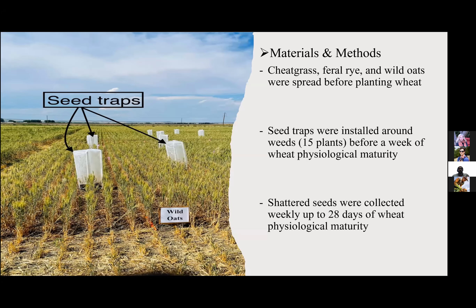Last summer, they worked with three species — cheatgrass, feral rye, and wild oat — spread before planting wheat. After the plants matured and started producing seeds, 15 plants were randomly selected per species, one week before wheat physiological maturity. Seed traps were installed around them to capture seeds and assess seed shattering phenology over time. Shattered seeds were collected from seed traps and seed shattering phenology was observed for 28 days after wheat physiological maturity.